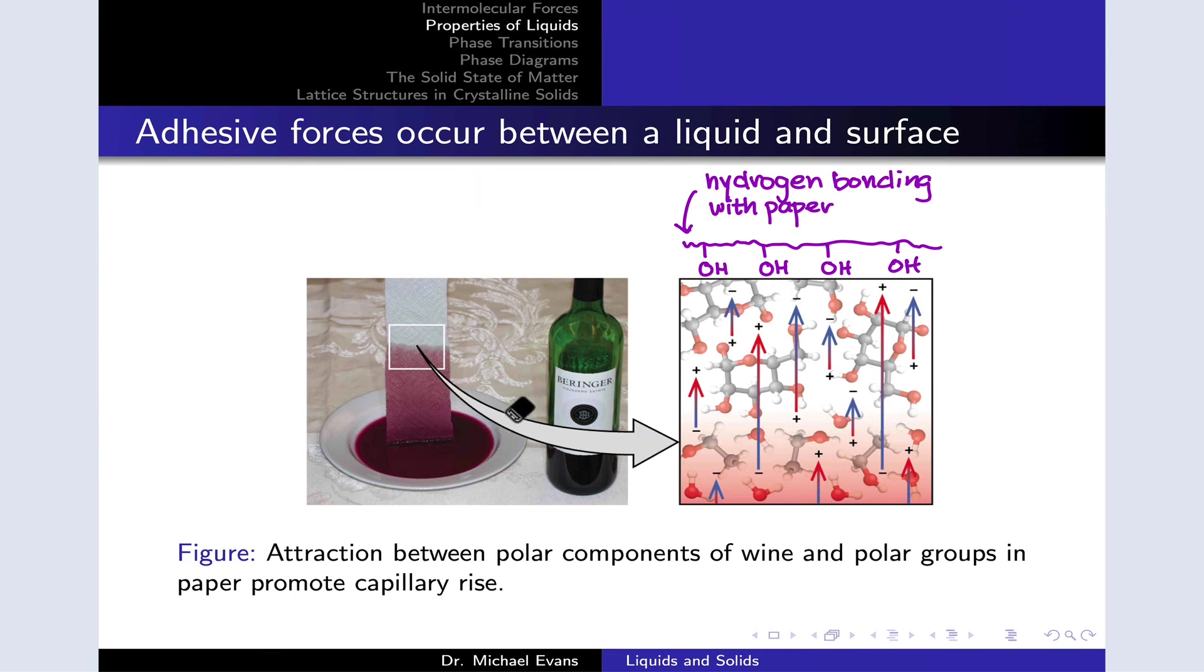For example, if you place a paper towel in, for instance, a saucer of wine, the wine starts to move up the paper towel on its own, seemingly defying gravity. It's not really defying gravity, though. The forces that move the liquid up are a combination of adhesive forces between the molecules in the wine—the sugars, the ethanol, et cetera—and the molecules in the paper towel.